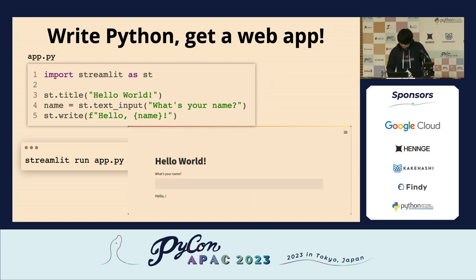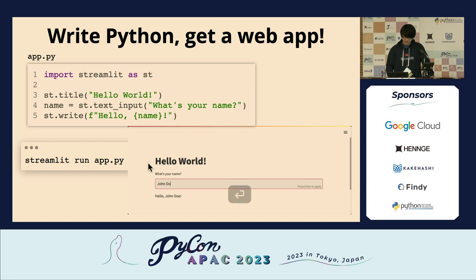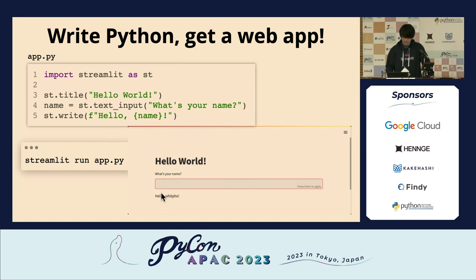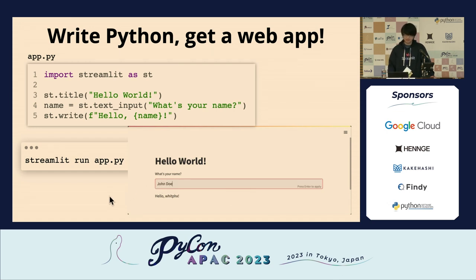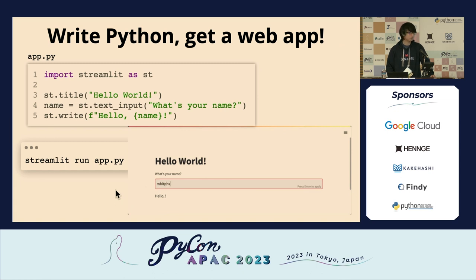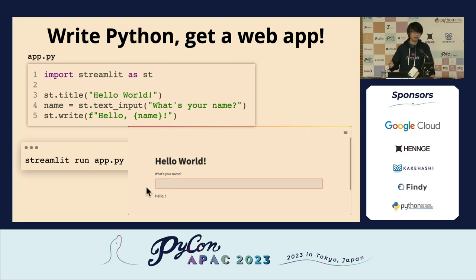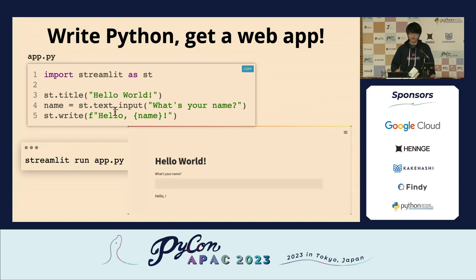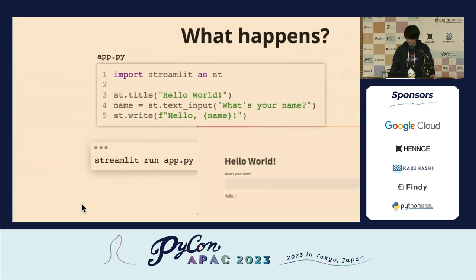There is no front-end coding. In the resulting application, you can see the title component, a text input, and a text output component. When you input text data to the text input field and hit Enter, the input text is automatically and reactively reflected in the text output field. This is interesting because what we wrote in app.py was just a simple Python script with no reactive parts like callbacks — but Streamlit automatically converted this static declarative script into a reactive application.